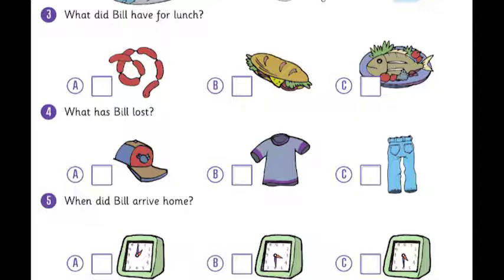4. What has Bill lost? What did you wear? Oh, just jeans and a t-shirt. I always wear a hat when I go walking. The sun might be very hot. I know. I always wear one too, but I couldn't find mine. I lost it at the school, I think.